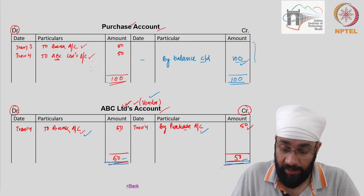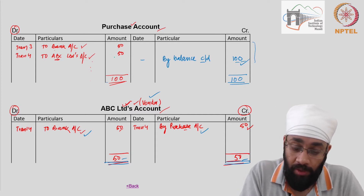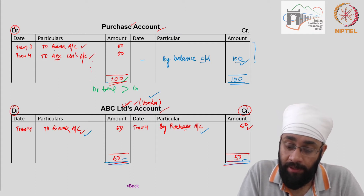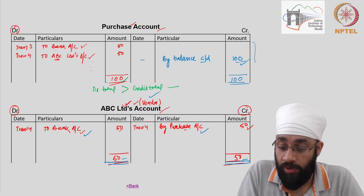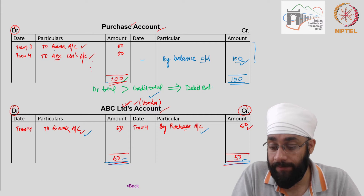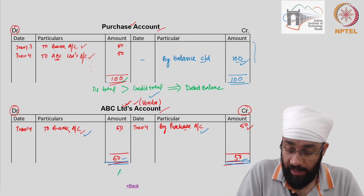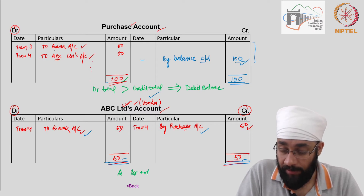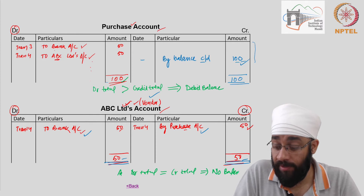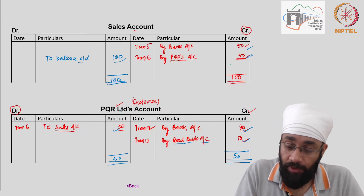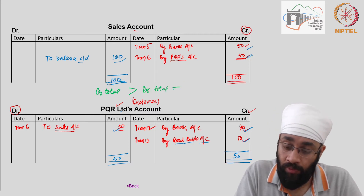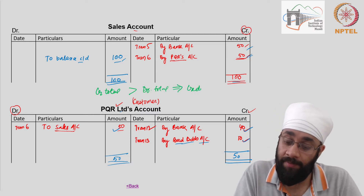The purchase account has a debit total of 100 and no item on the credit side, so debit total is greater than credit total, leading us to conclude that the purchase account has a debit balance. The ABC account has debit total equal to credit total, so there is no balance — neither debit nor credit. The sales account has credit total higher than debit total, giving it a credit balance.